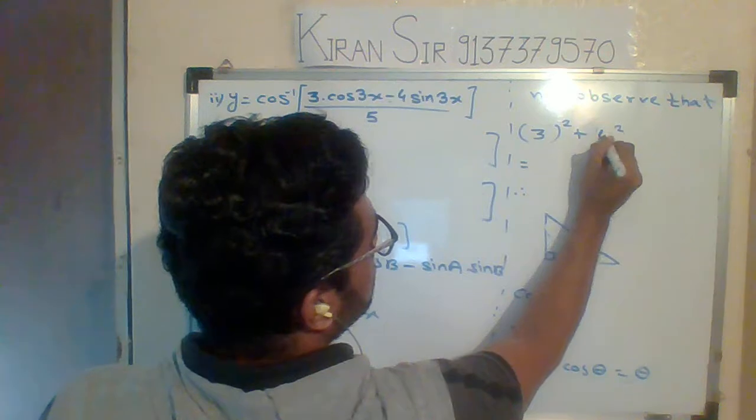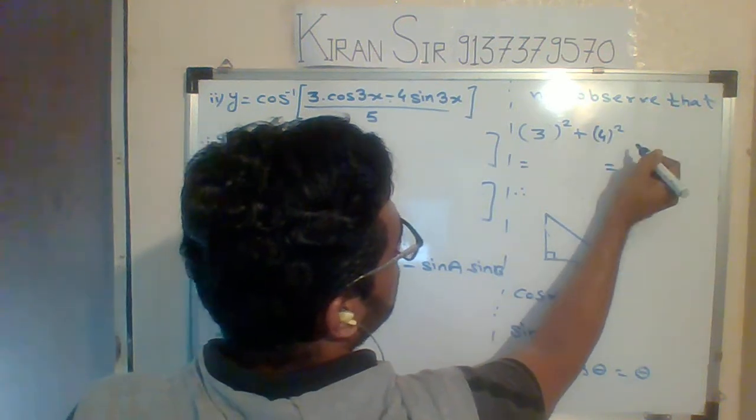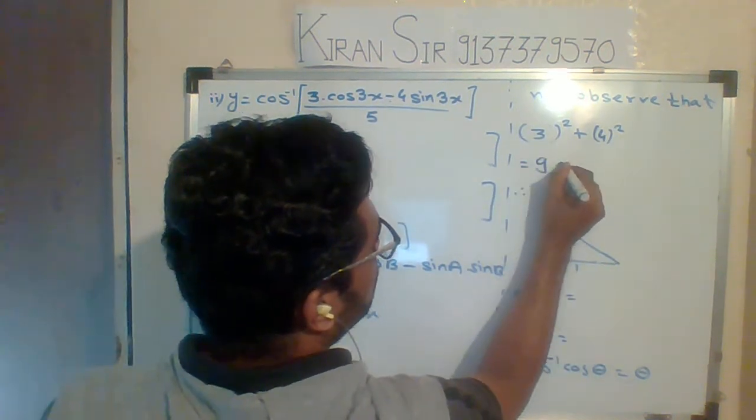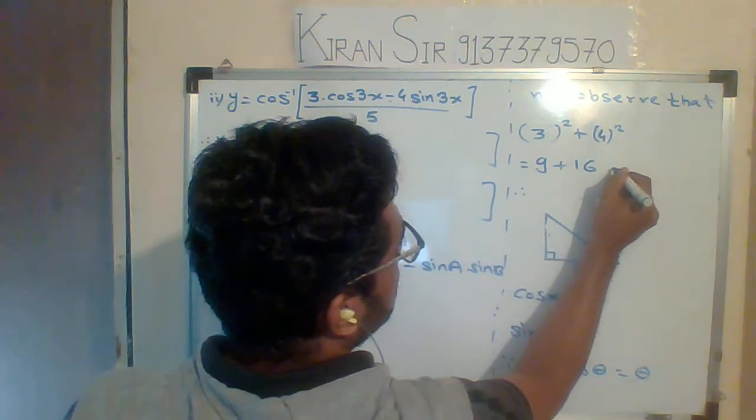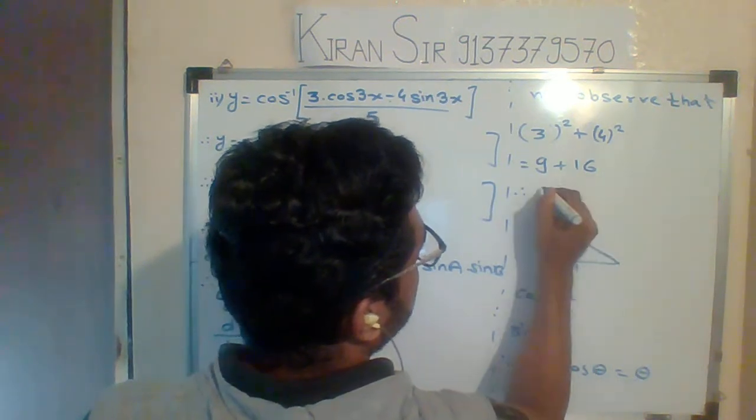3 squared is 9, 4 squared is 16. What is 9 plus 16? 25. If you observe that...